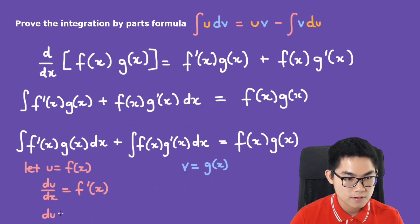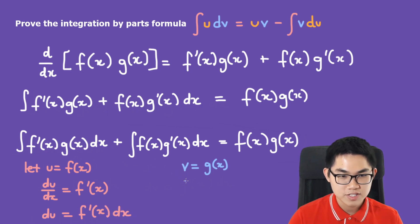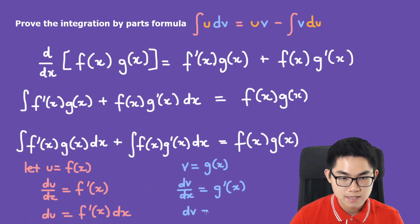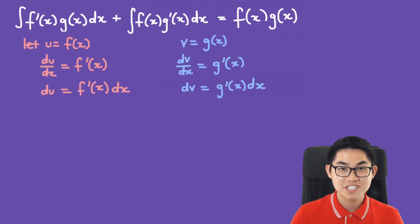So du is equal to f'(x) times dx. As for this one, when we differentiate it, dv/dx is going to be equal to g'(x).